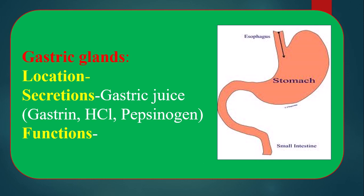The functions of gastric glands: gastric juice, especially gastrin, helps in digestion. Hydrochloric acid helps to kill microorganisms that enter the stomach, and also helps to break down food particles into their finest form. It also activates pepsinogen into pepsin, which helps to digest protein-type food.